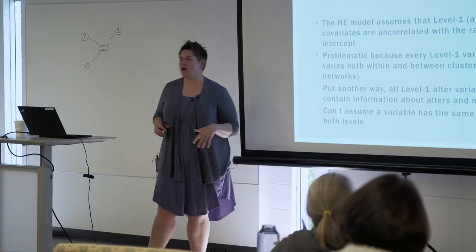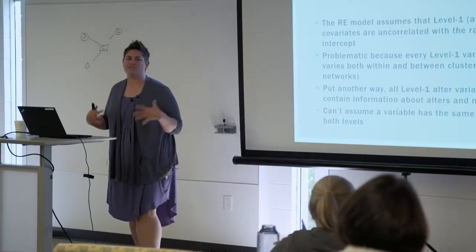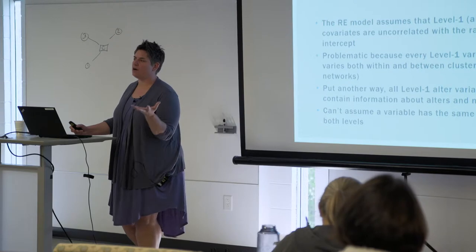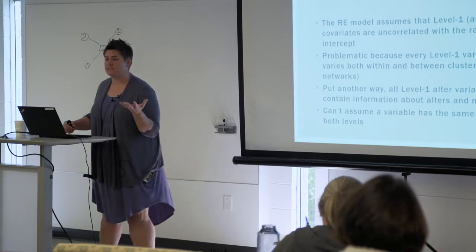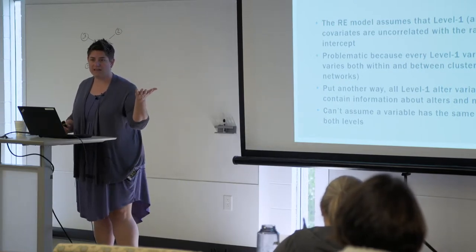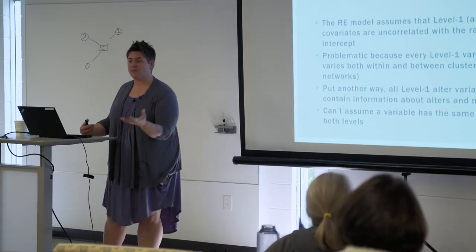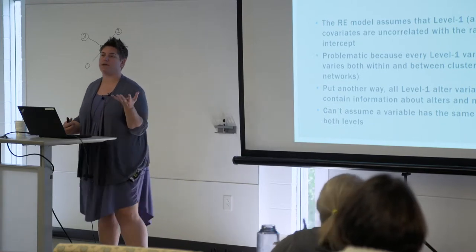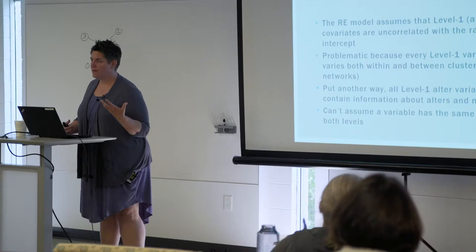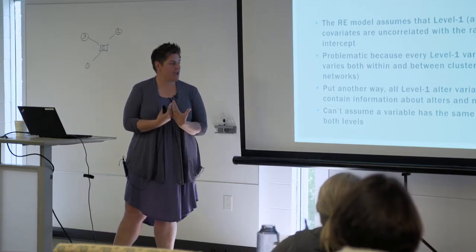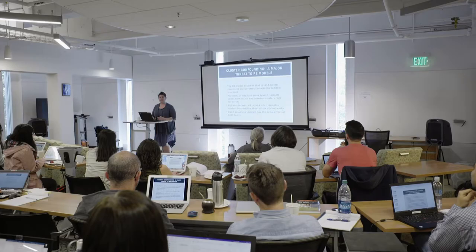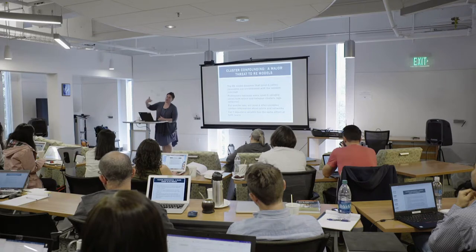All these level-one alter variables contain information about both alters and about networks. For every additional woman in the network, that tells me something about her gender but also about the gender composition of the network. Alters' education tells me something not only about their own education, but also the amount of social capital available in the network as a whole. So it's really important to try to disaggregate those two effects — the alter-level effects from the effect of that person's attributes contributing to the overall network effect.